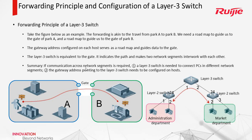Here we have a summary. A layer 3 switch is needed to connect PCs in different network segments. The gateway address needs to be configured on hosts. This is like a layer 3 switch, and we need to configure an IP address for this switch — for this gate — at the same time.